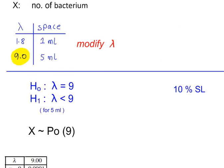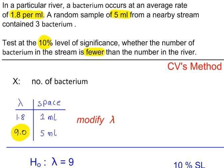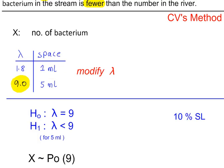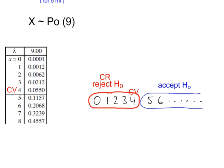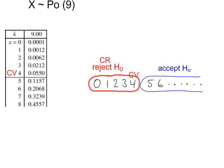The test value is 3. 3 is in the critical region. So we reject H0.